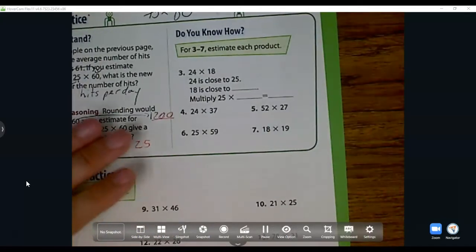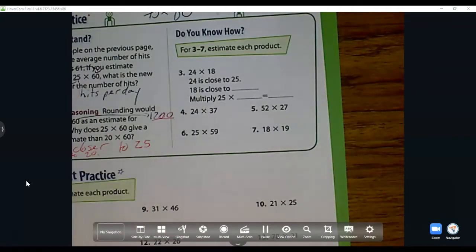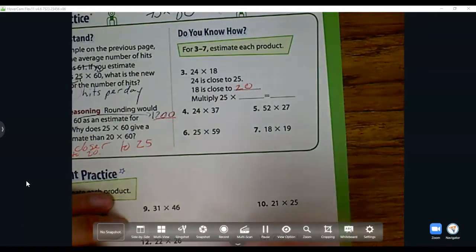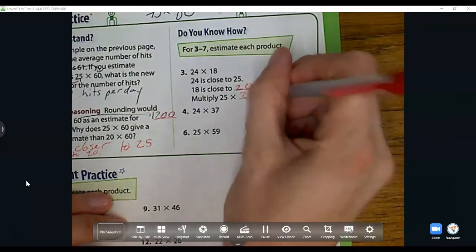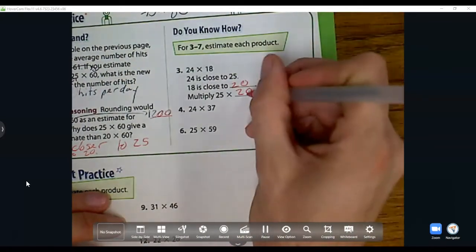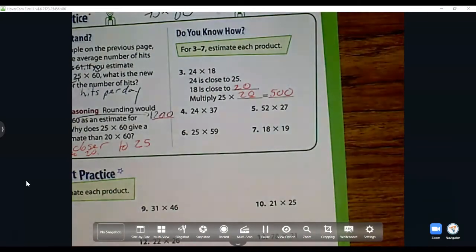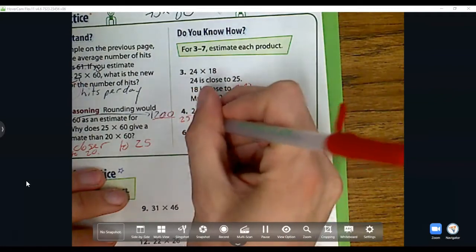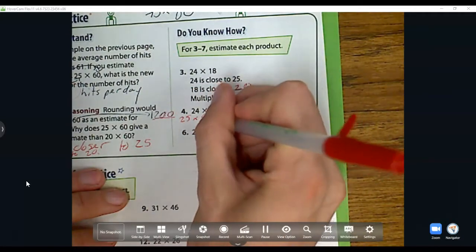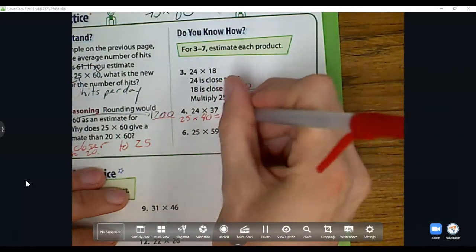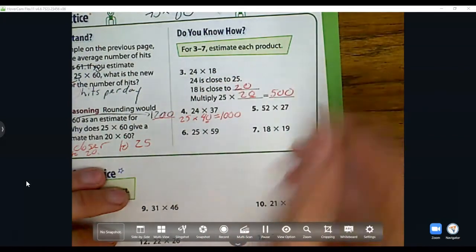Number three: 24 times 18. 24 is close to 25, 18 is close to 20. So now I multiply 25 times 20. 2 times 25 equals 50, and I add that zero back on for 500. Now 25 times 37 is close to 40, so 4 times 25 is 100, and I add that zero back on.